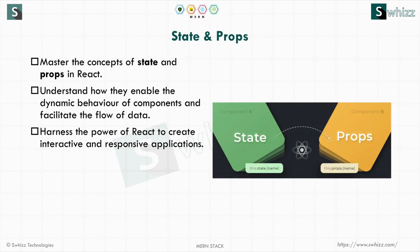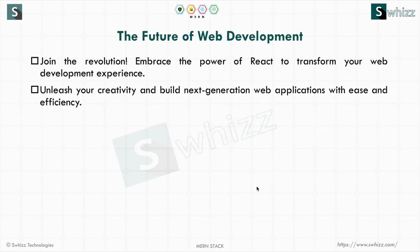In React components, there are two major concepts: state and props. State is used for handling data within a component, and props is used for transferring data from one component to another. As you can see in the image, component A and component B share data — the value changes from state to props as it transfers between components.